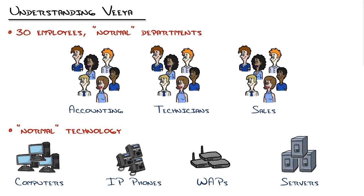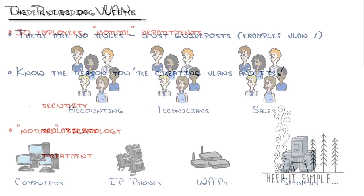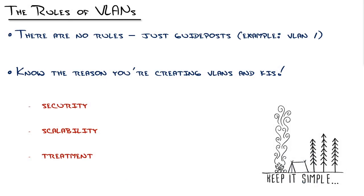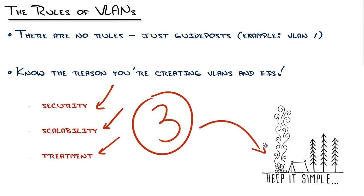You're really trying to hone in on three questions. I'd recommend watching the video all about the rules of creating VLANs if you haven't seen it. There are only three rules: you create a VLAN when you have a need for security, scalability, and treatment. That's it — three rules, keep it simple.